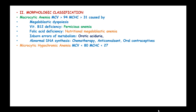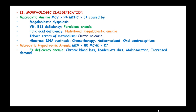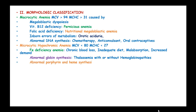Oral contraceptive use can also cause macrocytic anemia. The second classification is microcytic hypochromic anemia, where the mean corpuscular volume is less than 80 and mean cell hemoglobin concentration is less than 27. We have iron-deficient anemia due to chronic blood loss, inadequate dietary iron, malabsorption of iron, or increased demand late in pregnancy. Abnormal hemoglobin synthesis like in thalassemia, with or without hemoglobinopathies, and abnormal porphyrin and heme synthesis, which occurs in pyridoxine-responsive anemia.